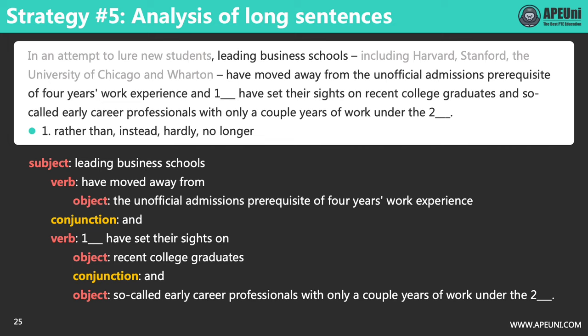What common semantic structure do the two parts connected by AND share? Are they two independent clauses, each containing a subject, verb, and object? Or simply two objects or phrases? We're not sure yet. 'Blank have set their sights on recent college graduates.' Looking at the options for the blank — rather than, instead, hardly, no longer — they are all adverbs, so this part is not a complete sentence because it does not have a subject. The subject must be something mentioned before, which can only be 'leading business schools.'